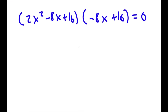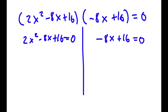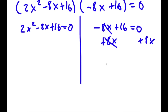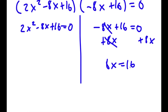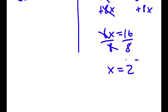So now we have two equations. We have 2x squared minus 8x plus 16 is equal to 0, and we have negative 8x plus 16 is equal to 0. For negative 8x plus 16 equals 0, I'm going to add 8x on both sides. These two cancel out, so I get 8x equals 16, and dividing both sides by 8, I get x is equal to 2.